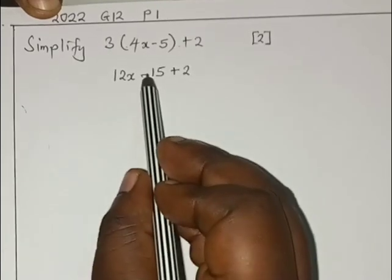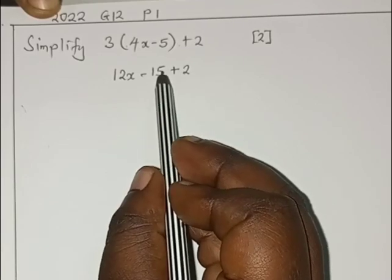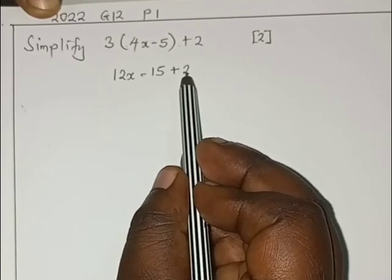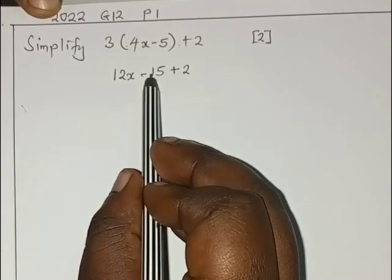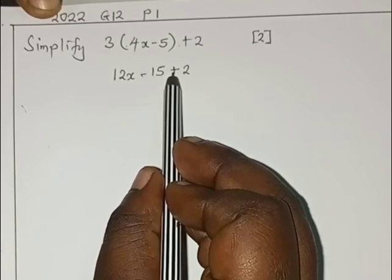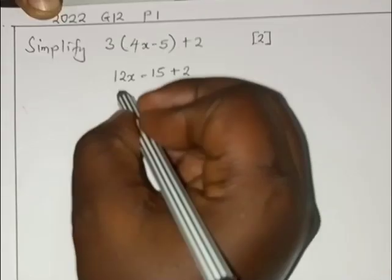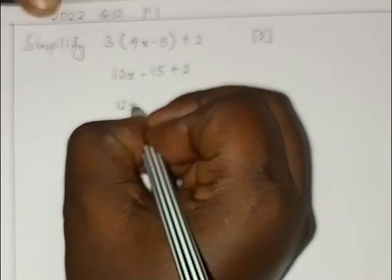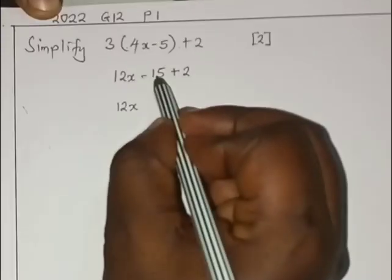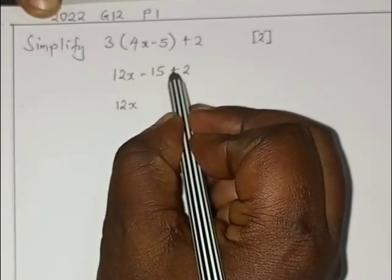Here we have negative 15 plus 2. Don't say 15 plus 2 please, there's a negative in front of 15. First of all you write the 12x, you write it down 12x. Here the negative 15 plus 2, the signs here are different, therefore you are subtracting.